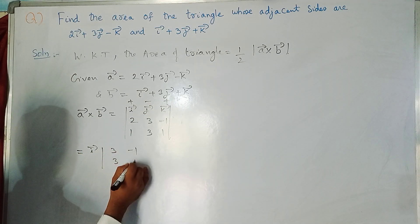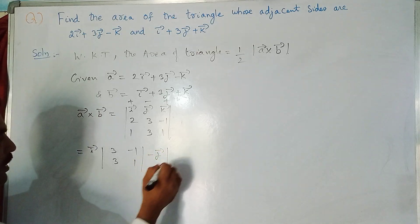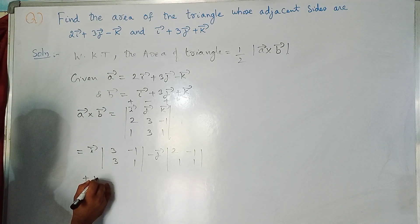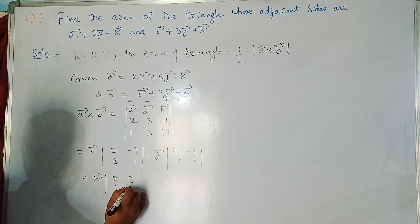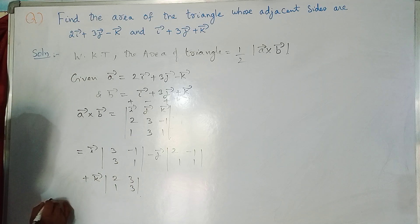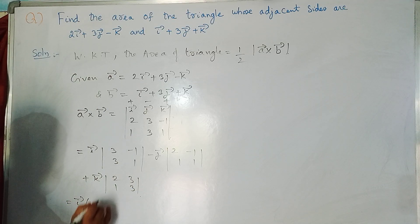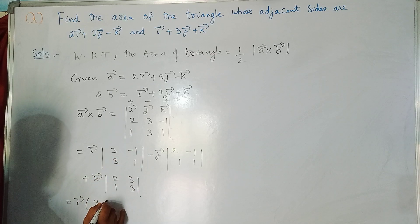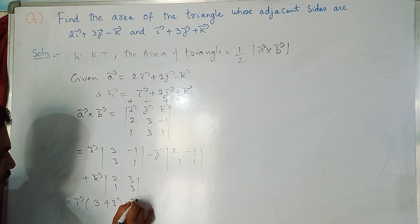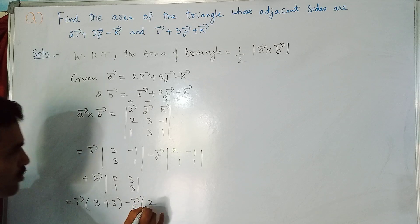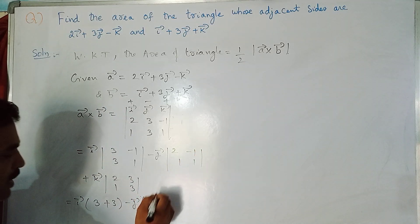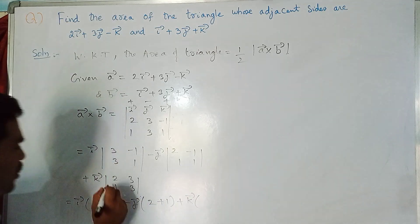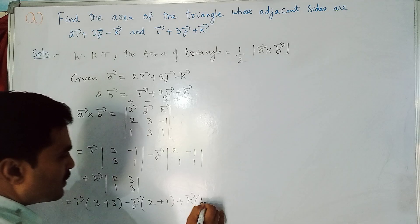Expanding: i-component is (3)(1) - (-1)(3); minus j-component is (2)(1) - (-1)(1); plus k-component is (2)(3) - (3)(1). Simplifying: i(3 + 3), minus j(2 + 1), plus k(6 - 3).